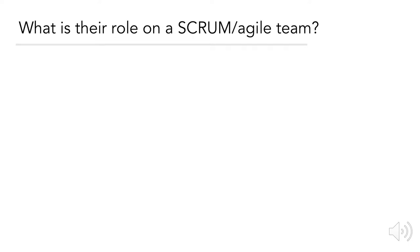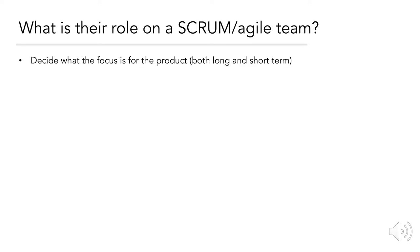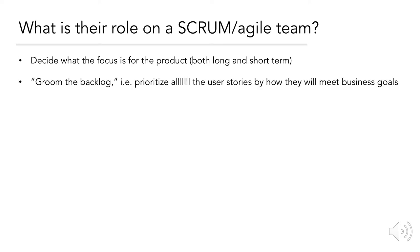So what's their role on a Scrum or Agile team? Well, the product manager has a short and a long-term strategy for the product and leads the team in fulfilling that strategy. So they decide what the focus will be, both long-term and short-term — for the next two weeks or the next 18 months. They groom the backlog, which is to say that they prioritize all of the user stories by how they will meet certain business goals.